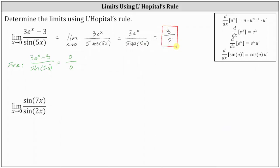Looking at our second example, let's first check the form by performing direct substitution. If we let x equal zero, we have the sine of seven times zero divided by the sine of two times zero, and the sine of zero is zero, giving us an indeterminate form of zero divided by zero. Therefore, we can apply L'Hopital's rule to determine the limit.